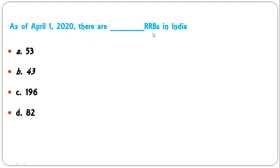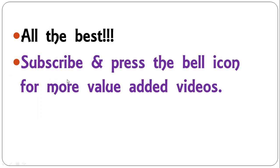As of April 1st, 2020, what is the number of RRBs or regional rural banks in India? Options: 53, 43, 196, or 82. The correct answer is 43 — there are only 43 RRBs now. These are all the questions, dear students. Thank you so much and all the best for your upcoming examination.